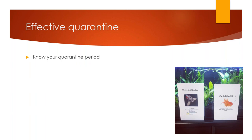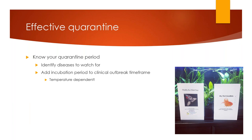It's very important that you know your quarantine period — the duration your fish have to undergo to ensure any disease they could possibly present with has the opportunity to show itself and be treated. First, identify the diseases you need to watch out for. Then add the incubation period — the time a disease takes to develop within a fish to the time frame for a clinical outbreak. Keep in mind all of this is temperature dependent. Once you have that length of time, we recommend extending the duration by at least one week, and two is better.